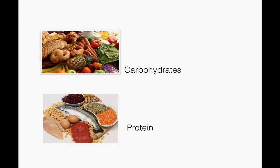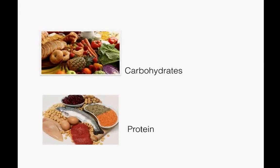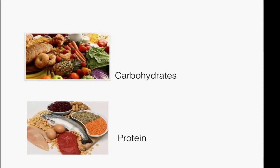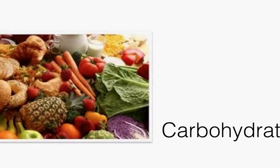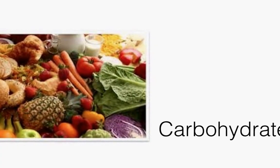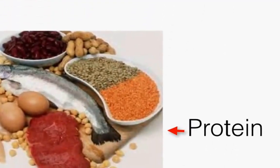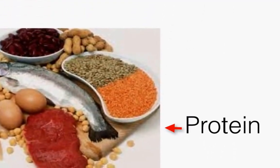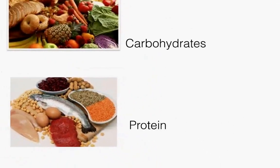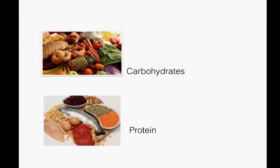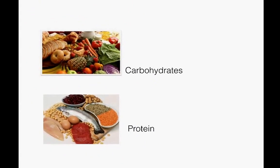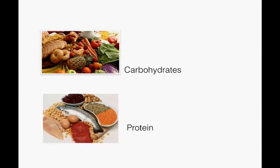We've discussed the importance of balancing carbohydrates, protein, and fat for a balanced diet. To review, carbohydrates provide energy for your body and protein helps build and repair your muscles. Fat helps build cell membranes, cushions organs, and regulates temperature. In this session, we will focus on carbohydrates and proteins.